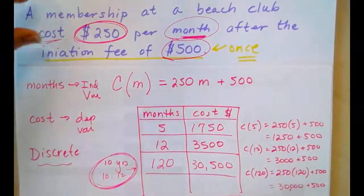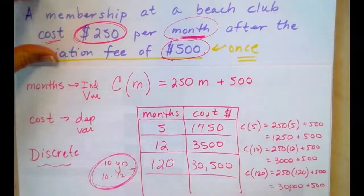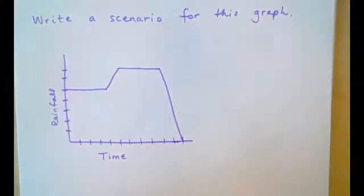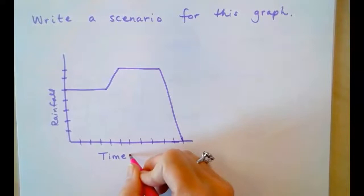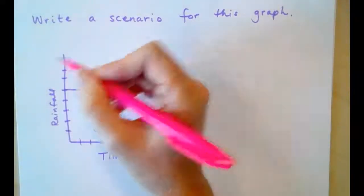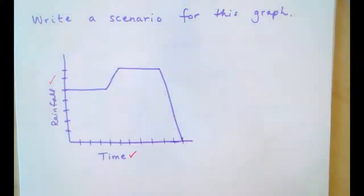We will have a problem like that on the quiz. Next, write a scenario for this graph. Now, notice my graph here has no scale on the x-axis or the y-axis. It's just telling me that we're talking about time as the independent variable and the amount of rainfall for the dependent variable.